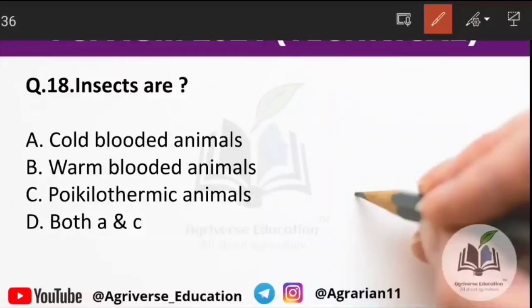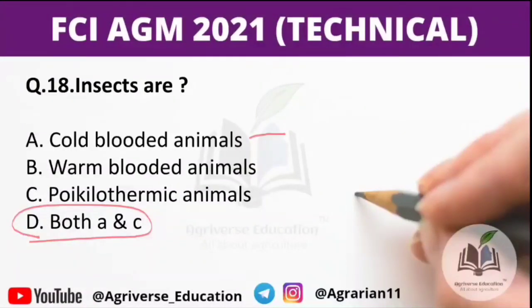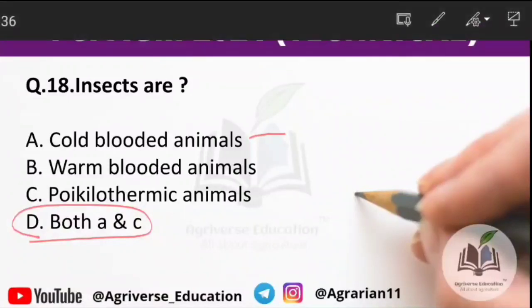Question 18: insects are which type of animals? The right answer is option D — both cold-blooded animals and poikilothermic animals. Poikilothermic animals are those whose internal temperature varies considerably — examples include amphibians, fish, and reptiles. Poikilothermic animals cannot generate internal heat. So insects fall under poikilothermic animals.